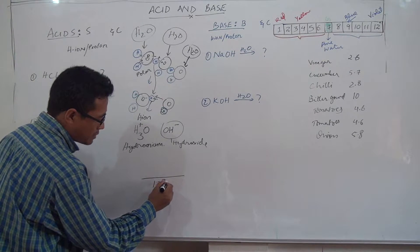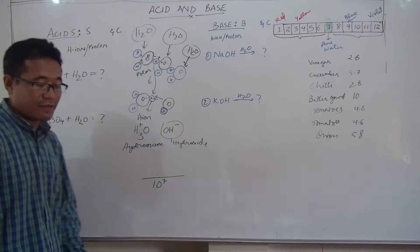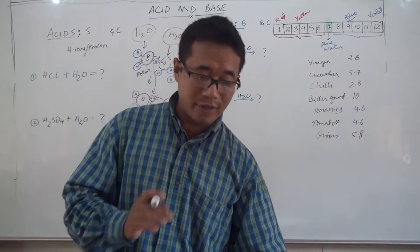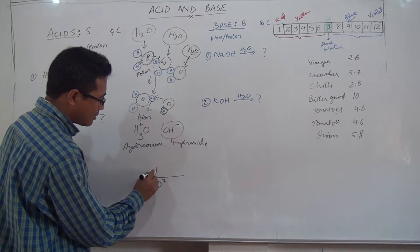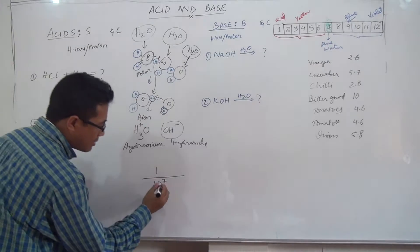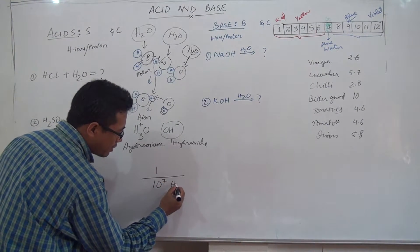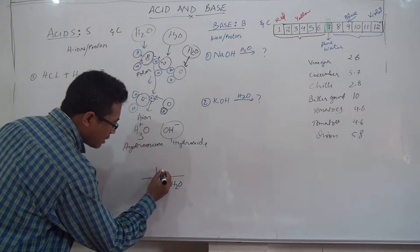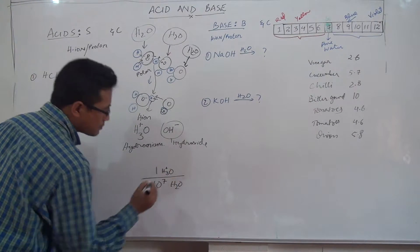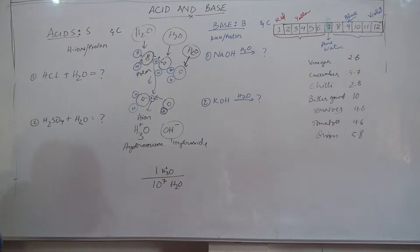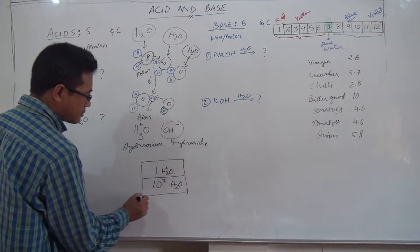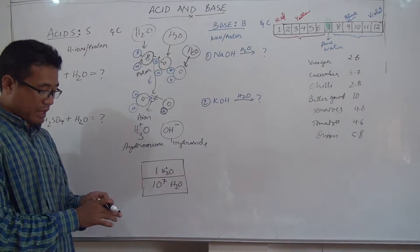In a beaker, suppose you have 10 to the power of 7 — that is 10 million molecules of water. Out of those 10 million water molecules, usually only one will be a hydronium ion. So there is one H₃O⁺ for every 10 million water molecules.